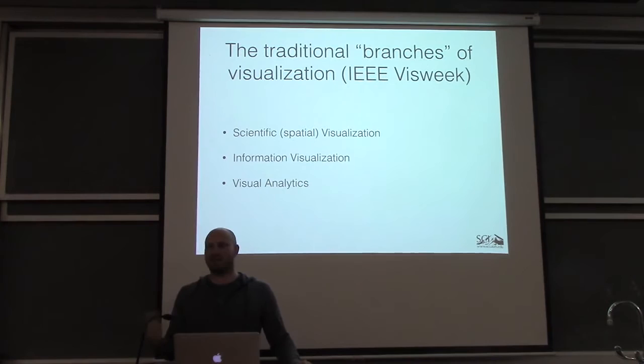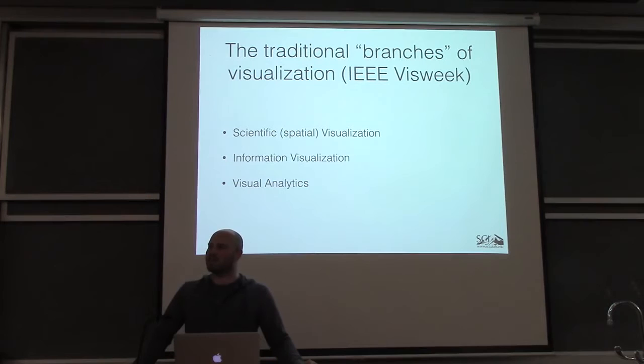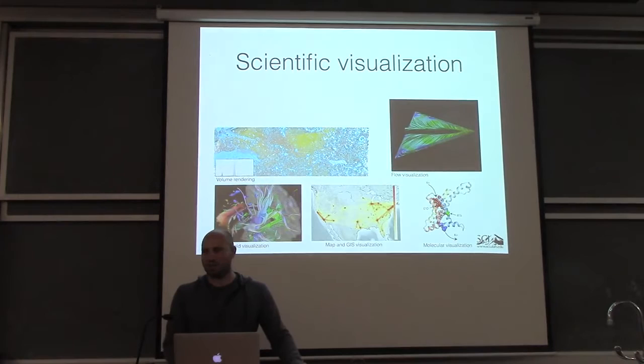Just to give a little background: the divisions of InfoViz, SciViz, and VAST are rapidly going away. But for at least the last 18 years they've had these classifications at IEEE Vis — scientific visualization, information visualization. VAST came last, around 2003. They've been more or less how we thought of visualization as a discipline.